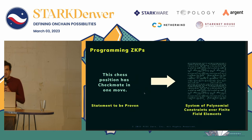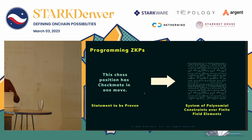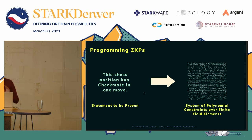Whenever you're doing programming in ZKP, the main thing you have to do is figure out a way to convert the thing you want to prove — the statement you're interested in proving — into, under the hood, a system of polynomial constraints over finite field elements, which is generally not a very programmer-friendly way to write software.